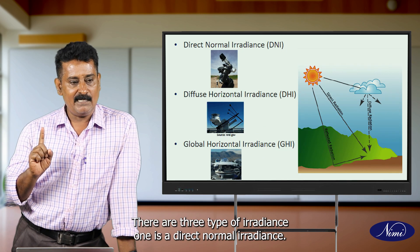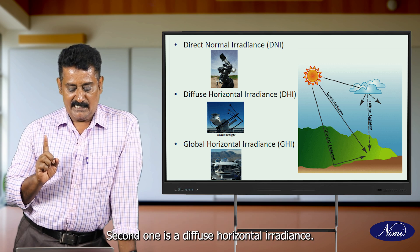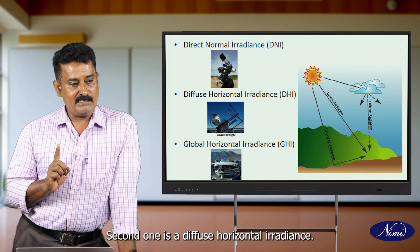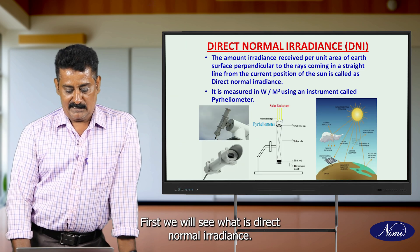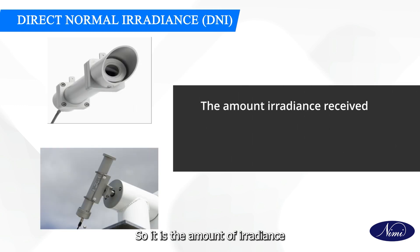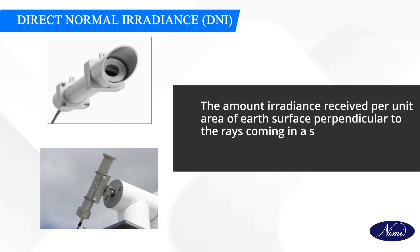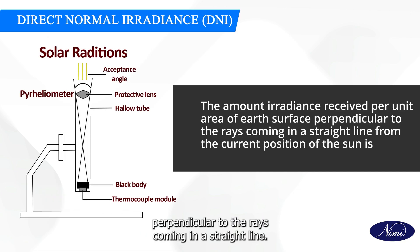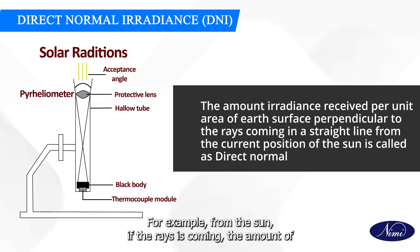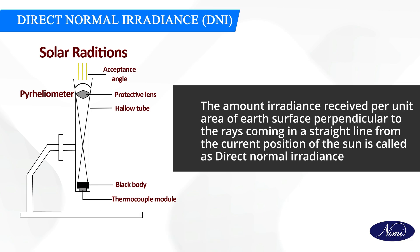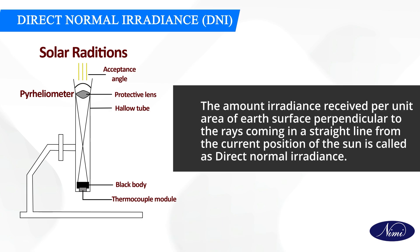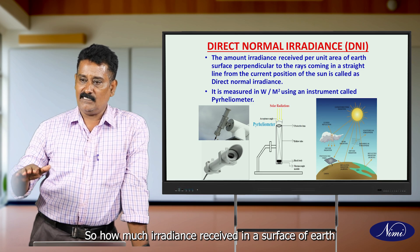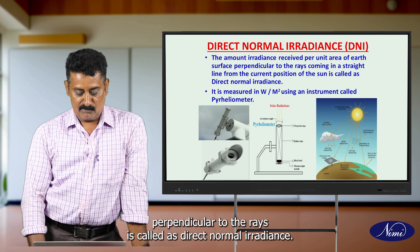There are three types of irradiance. One is direct normal irradiance. Second is diffuse horizontal irradiance. Third is global horizontal irradiance. Direct normal irradiance is the amount of irradiance received per unit area of Earth surface perpendicular to the rays coming in a straight line from the sun. The amount of irradiance received on the Earth surface which is perpendicular to the rays is called direct normal irradiance.